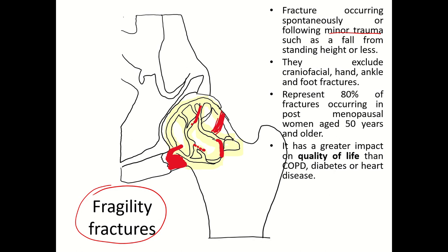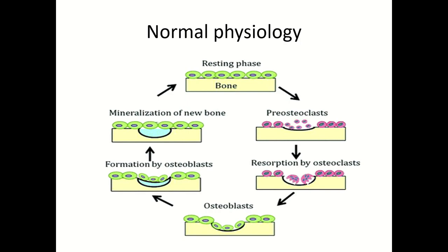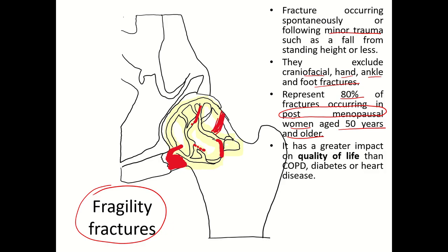Fragility fractures exclude craniofacial, hand, ankle, and foot fractures, and represent 80% of fractures occurring in postmenopausal women aged 50 years and older. Postmenopause is a very important risk factor for osteoporosis. Fragility fractures have a greater impact on quality of life compared to diabetes, COPD, or even heart disease.